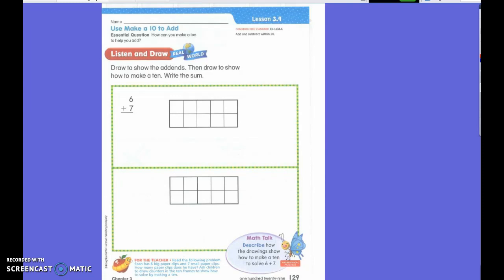How many big paper clips did I say Sean had? Six. Very good. So we would draw what? Six. One, two, three, four, five, six.